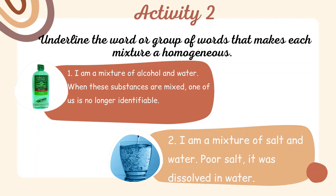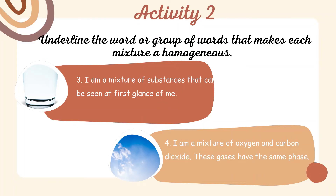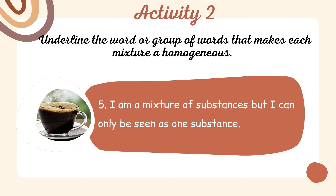Just underline the hint. Number one: I am a mixture of alcohol and water. When these substances are mixed, one of us is no longer identifiable. What is the word or group of words that makes this homogeneous? Number three: I am a mixture of substances that can be seen at first glance of me. What are the words that make this sentence homogeneous? The fifth one is: I am a mixture of substances but I can only be seen as one substance. Take your time in answering activity two.